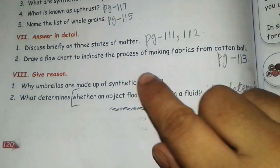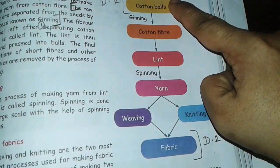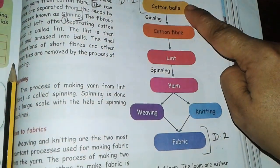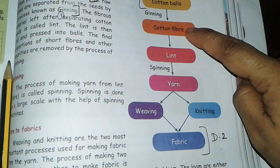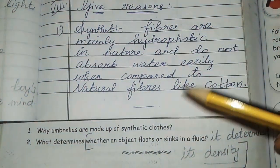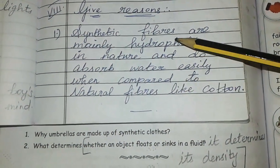Second question: draw a flowchart. See page number 113 — the flowchart is the answer. Cotton bales, cotton fiber — it will lead to fabric. See page number 113. Next — give reasons: first one answer — this is copy it — synthetic fibers.